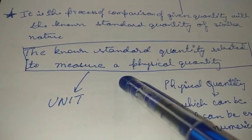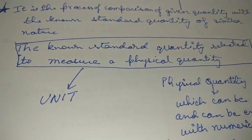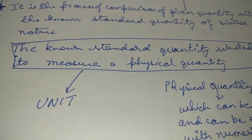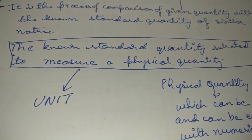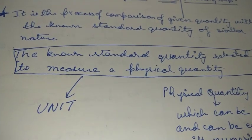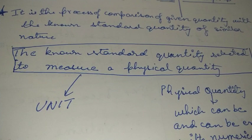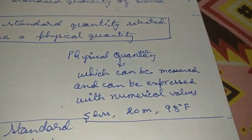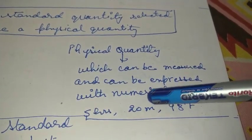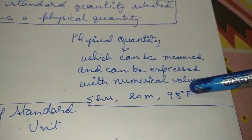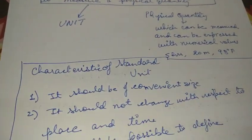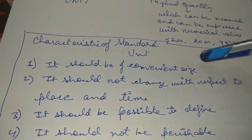So what is a unit? A unit is the known standard quantity selected to measure a physical quantity. On a scale there are basically two units — centimeter and inches — where 1 inch equals 2.54 centimeters. It depends on whether you use inches or centimeters. Centimeter, inches, feet — these are all units. In our earlier examples, hours, meters, and Fahrenheit are the units, while 5, 20, and 98 are the numerical parts.